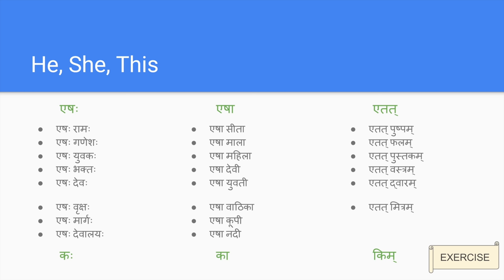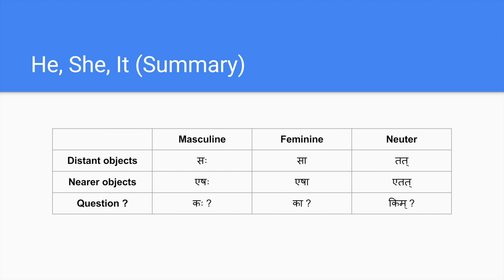To summarize: for distant objects we use saha, sa, tat; for nearer objects we use aesha, aesha, etat; and the question words are kaha, ka, kim. As part of this session, let's try to learn as many new words as possible, because the more you frame sentences the more vocabulary you will need. Words like sanganakyam, dwaram, lekhani, dooradarshanam, dooravani - every time you start framing words, you will be in demand of new words.